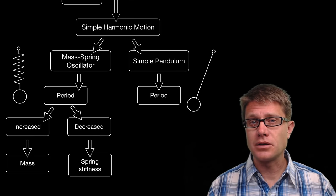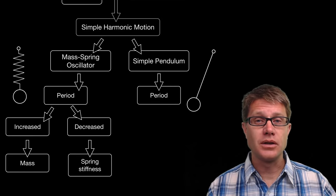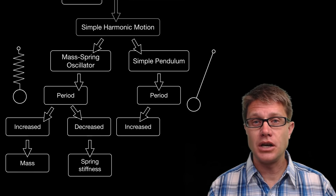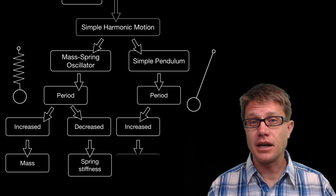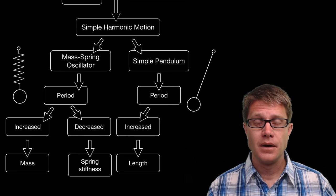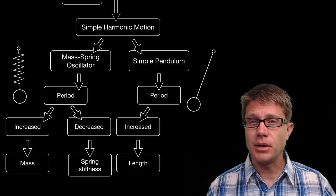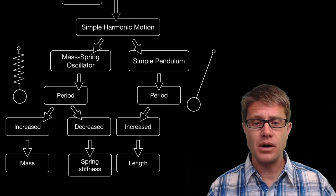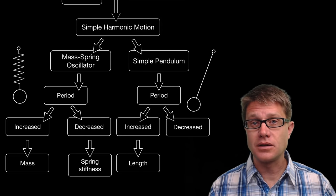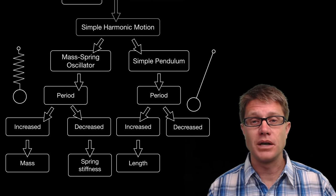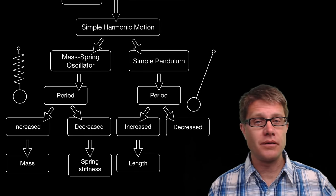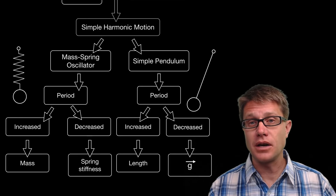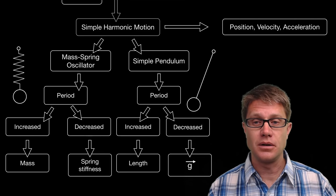What about a pendulum? How do we increase the period of a pendulum? We do that by simply changing the length of the pendulum. What is interesting about pendulums is the mass does not have anything to do with it. How do we decrease the period of the pendulum? We have to change the gravitational field strength. As we increase that field strength, we are going to decrease the period.